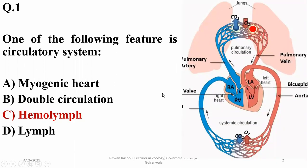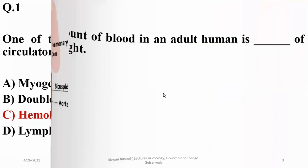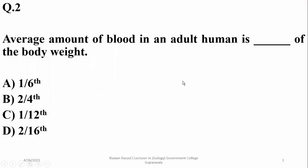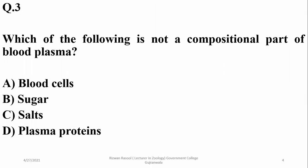It's double circuit circulation as shown here. Question number two: the average amount of blood in an adult human is one-twelfth of the body weight. You can divide the body weight of an individual by 12 to get the amount of blood in liters.